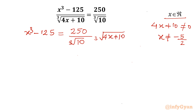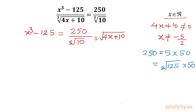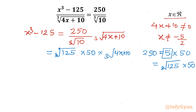Now I will rewrite 250 separately. 250 can be written as 5 × 50, and 5 can be written as ∛125, since 125 = 5³ and the cube root and cube cancel. So 250 = ∛125 × 50. Then we still have ∛(4x + 10) in the numerator and ∛10 in the denominator.